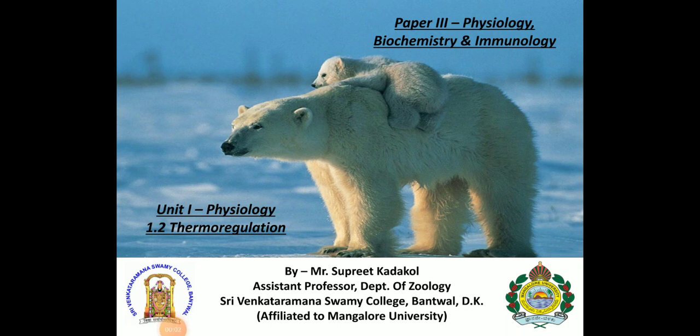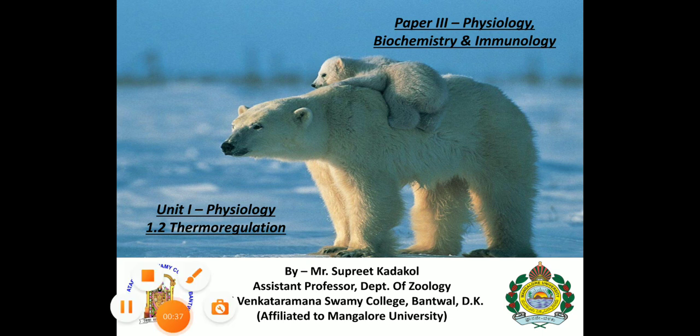Hello everyone. In this paper — paper 3, physiology, biochemistry and immunology, under unit 1 physiology — we have discussed the introduction to thermoregulation and types of animals: cold-blooded animals, warm-blooded animals, and different types like ectotherms, endotherms, and heterotherms. In this session, we are mainly going to discuss the mechanisms of animals to overcome thermoregulation.